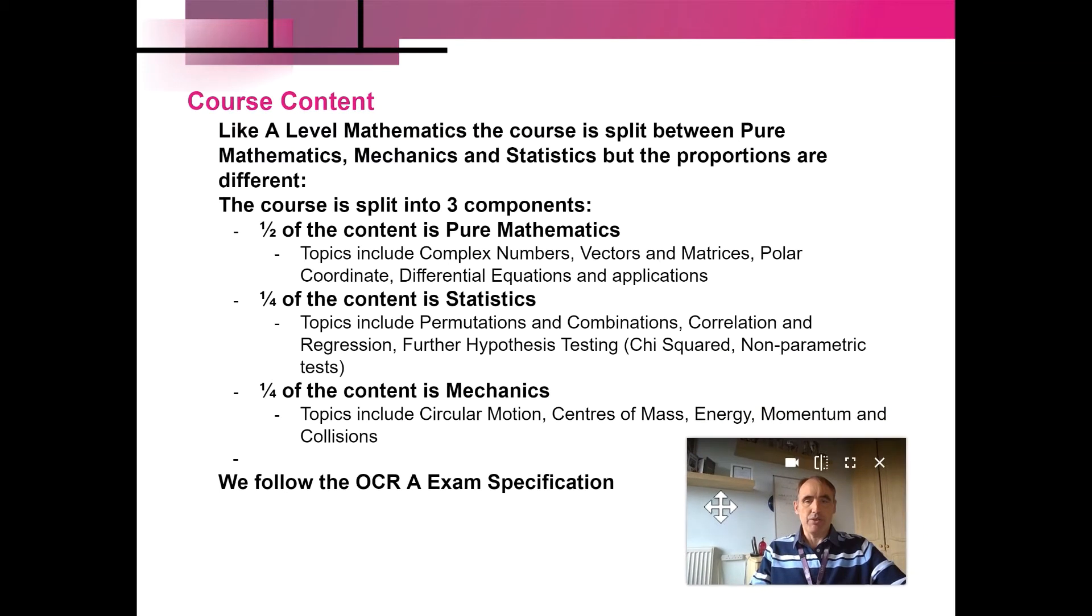There is a broad outline of the course content. It is not an exhaustive list by any means. Note that we are studying also pure mathematics statistics and mechanics, so the broad areas are the same as in the main A level course. Proportions are slightly different. I've listed some of the topics there, which we cover in further mathematics, which we either don't do at all in the standard maths A level course, such as complex numbers, or we do in much less depth. For example, correlation and regression. We follow the OCR A exam specification.